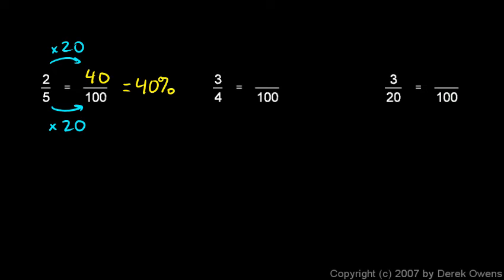3/4 equals how many hundredths? To get the denominator from 4 to 100, we have to multiply by 25. So I need to multiply the numerator by 25. The idea here is that you can always take a fraction and multiply the numerator and denominator by the same thing and get an equivalent fraction. So if we multiply the top by 25 also, we end up with 75. So 3/4 is equivalent to 75/100, which could be written as 75%.